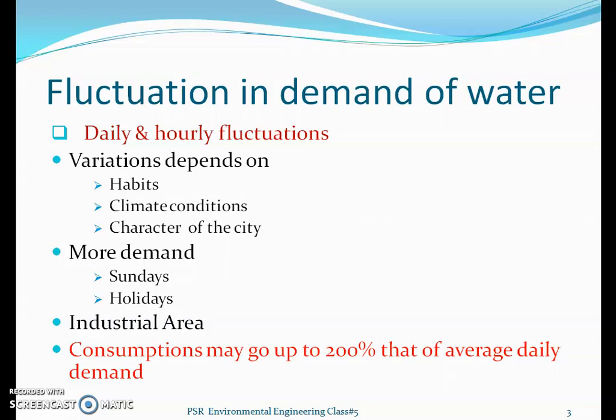On holidays and Sundays, the hourly water demand fluctuates highly because people do more work, take comfortable baths, and do more washing. During Indian conditions, customs also cause more fluctuations during holidays. Peak hours on regular days are generally 7:30 to 8:00 AM when household domestic works are completed. On holidays, peak hours are 6 AM to 10 AM and evening 4 to 8 PM.